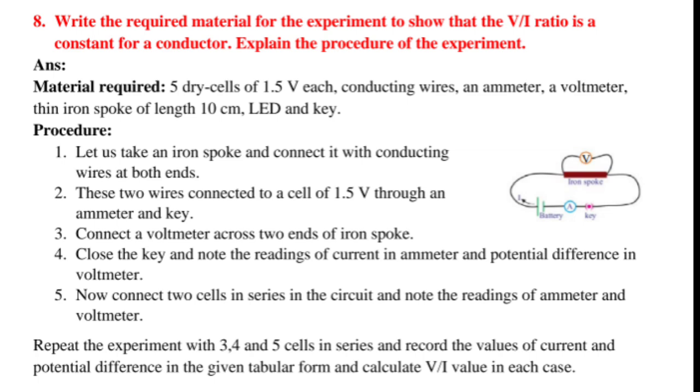Procedure: 1. Let us take an iron spoke and connect it with conducting wires at both ends. 2. These two wires are connected to a cell of 1.5 volts through an ammeter and key. 3. Connect a voltmeter across two ends of iron spoke. 4. Close the key and note the readings of current in the ammeter and potential difference in voltmeter.